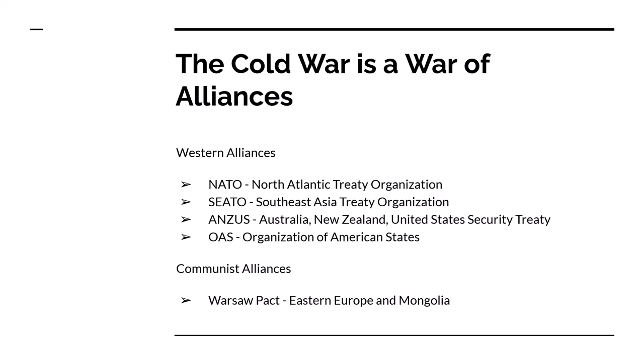The free world consisted of the United States, Western Europe — especially England and France — and other democratic nations. The communist world included the Soviet Union, North Korea, China, Vietnam, and some other places. These two sides break down into alliances. For the Western alliances, you have the North Atlantic Treaty Organization, the Southeast Asia Treaty Organization, and ANZUS, which was Australia, New Zealand, and the United States. In the Western Hemisphere, we had the Pan American Union, which later became the Organization of American States.